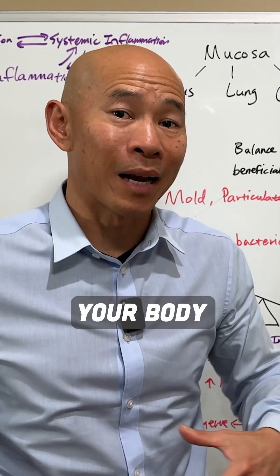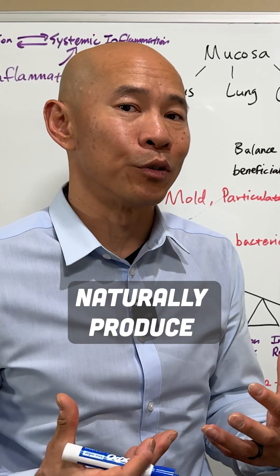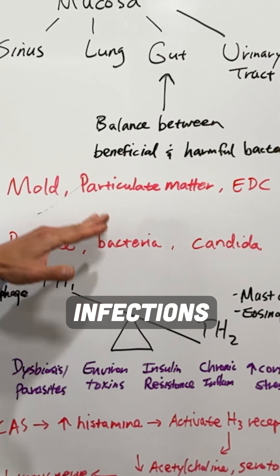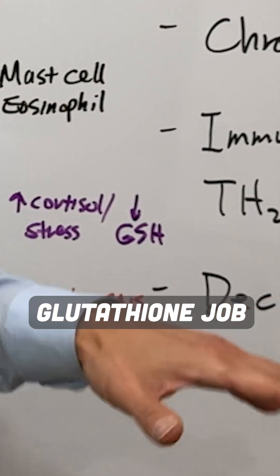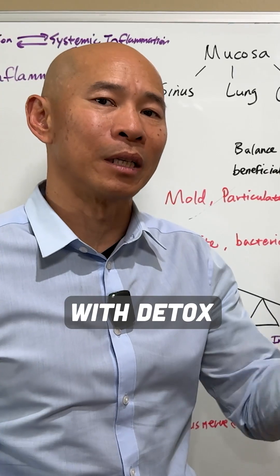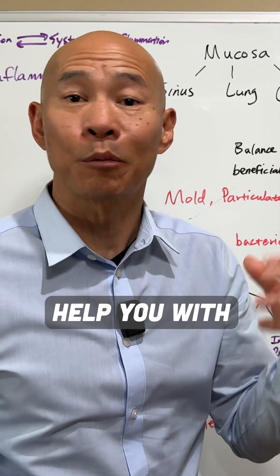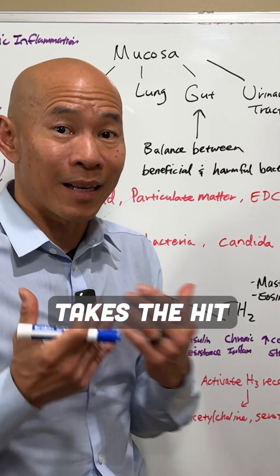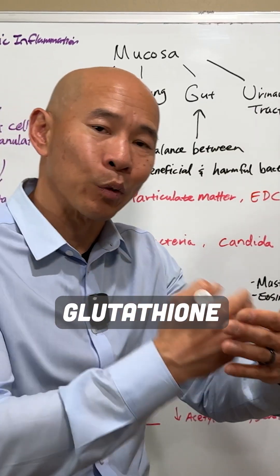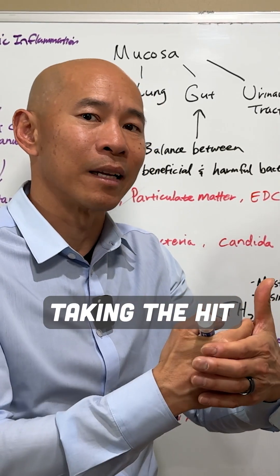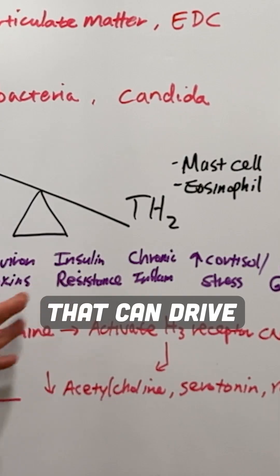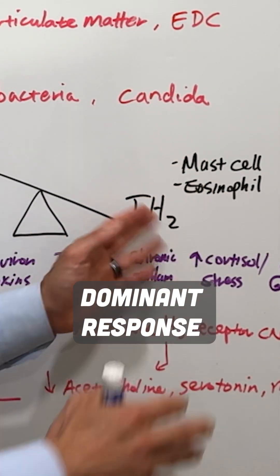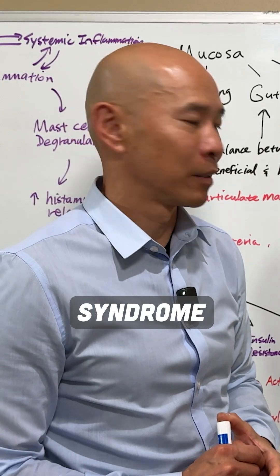Glutathione is an antioxidant your body naturally produces, but you only make so much in a day. If you use it all up due to chronic infections and toxins — which is what glutathione's job is, to help you with detox, antioxidant activity, and immune function — then you can run out of glutathione. Then your body takes the hit instead of the glutathione protecting you like a shield. These are things that can drive the immune system into this TH2-dominant response that can lead to mast cell activation syndrome.